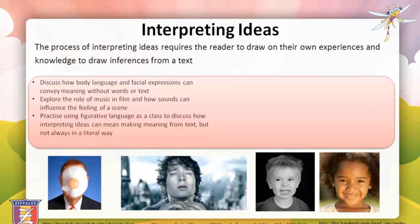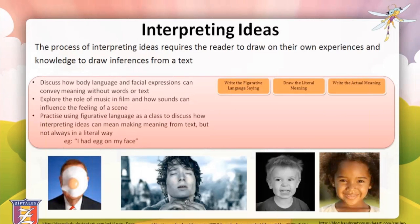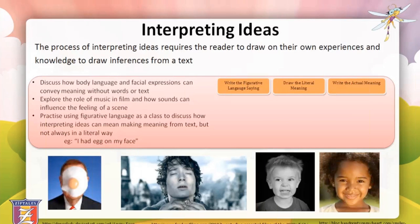Another activity could be to explore how music helps us interpret what is going on in a movie. Play scenes from popular movies with the sound turned down and with different music playing to see how it affects our interpretation of what is happening. For example, you could play sorrowful music in a high adventure scene. Another activity could be to use figurative language sayings to discuss how interpreting ideas means making meaning from text but not in a literal way. You could use sayings such as 'I felt a weight lift off my shoulders' or 'I had egg on my face' — students write the saying, draw the literal meaning, and then write the actual meaning. You could do something similar with proverbs, such as 'the grass is always greener on the other side' or 'the early bird gets the worm.'